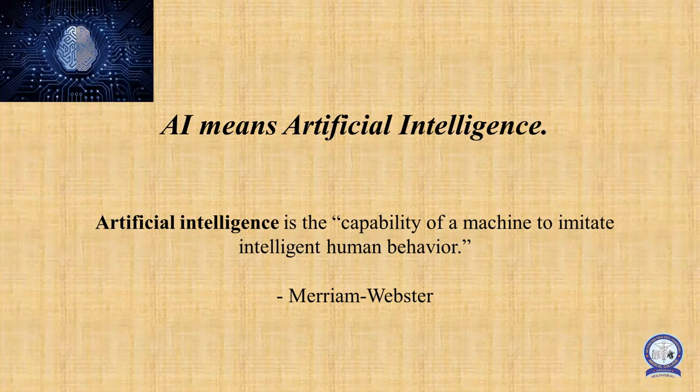As per Merriam-Webster, the definition of Artificial Intelligence is the capability of a machine to imitate intelligent human behavior. Here, according to Merriam-Webster, machine and human are correlated.